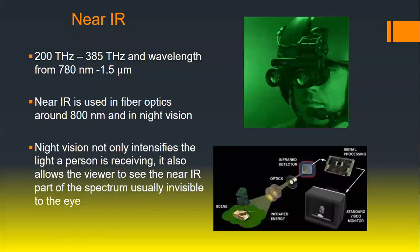Near-infrared overlaps with fiber optics, but is also known for night vision. Night vision not only intensifies the light that the person is receiving, it also allows the viewer to see near-infrared, which is normally invisible to the human eye.